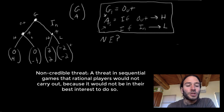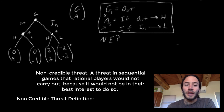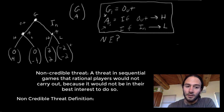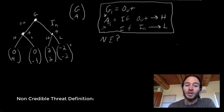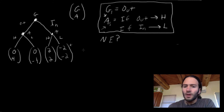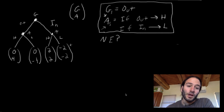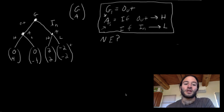Even though it's a Nash equilibrium for Google to play out and Apple to have this strategy, we don't actually believe that if Google switched to in, Apple would keep its strategy at low price. Our intuition says Google will play in and Apple will choose H, and both players will get two — which is not what this Nash equilibrium is telling us. So we're looking for a way to refine this Nash equilibrium to rule out these non-credible threats. In the next video we'll introduce what is known as the subgame perfect equilibrium and show how it rules out these non-credible threats.